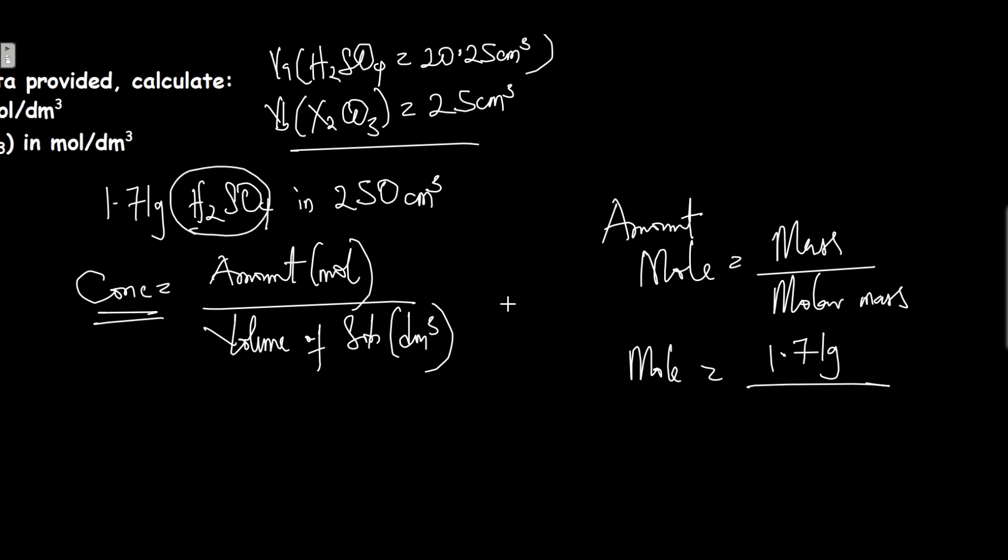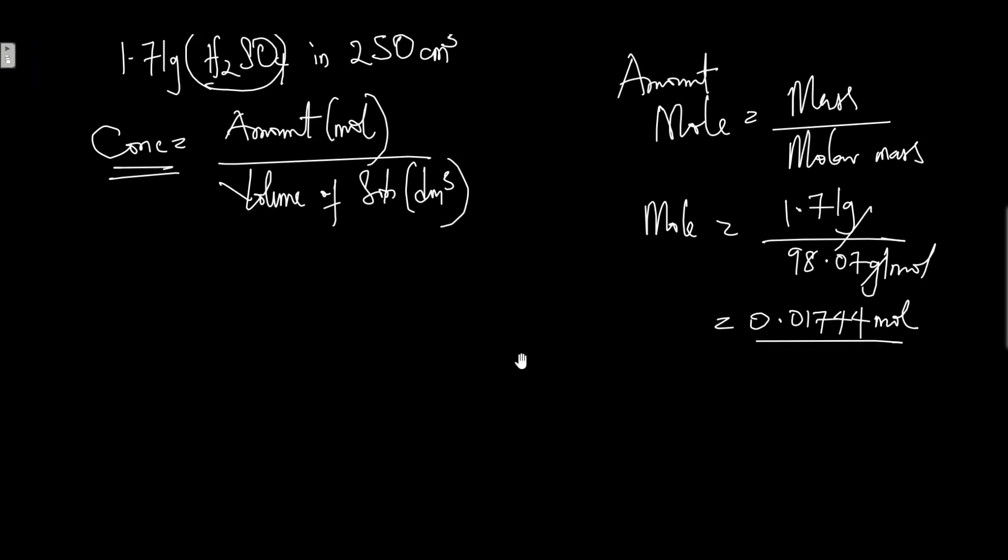And the molar mass is the molar mass of sulfuric acid, which we have as 98.07 grams per mole. When you divide these two together, you have 0.01744 mole. Now we substitute this into the equation.